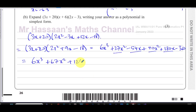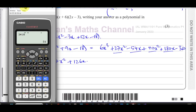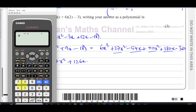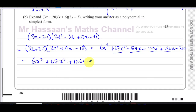For the x terms: −54x + 180x = 126x. So the final expanded polynomial is 6x³ + 67x² + 126x − 360. That's the answer to part (b) in its simplest form.